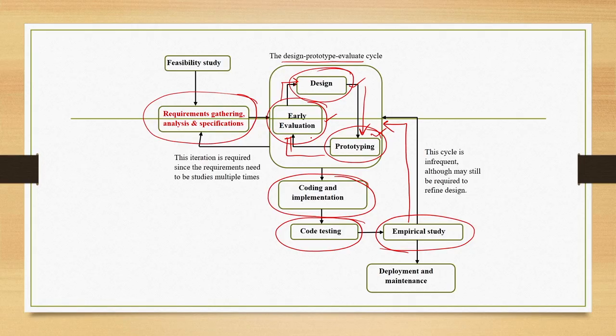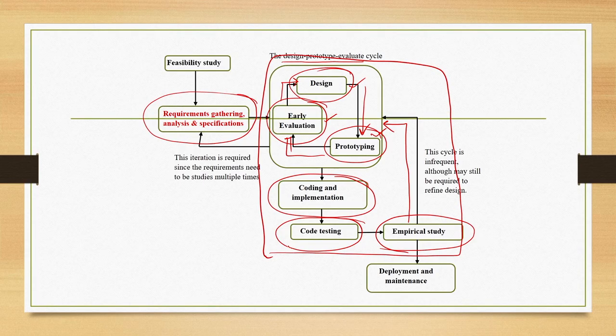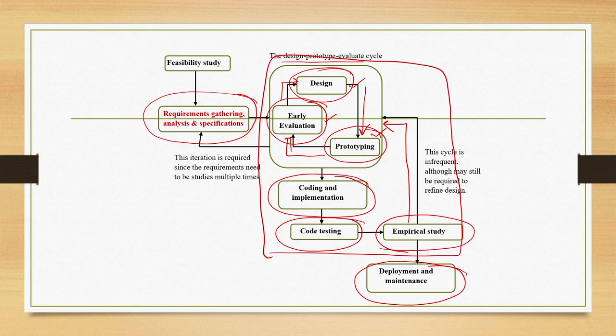Ideally we should aim to identify the major number of problems within the design-prototype-evaluate cycle itself in the initial stages, and maybe only once or twice enter the larger cycle. Once usability issues are taken care of and we are ready with the final executable and usable product, we go for deployment and maintenance. That is ideally what should happen when developing an interactive system.